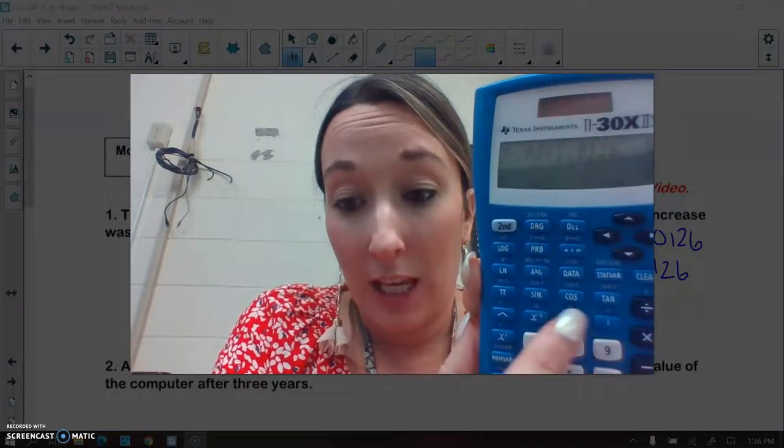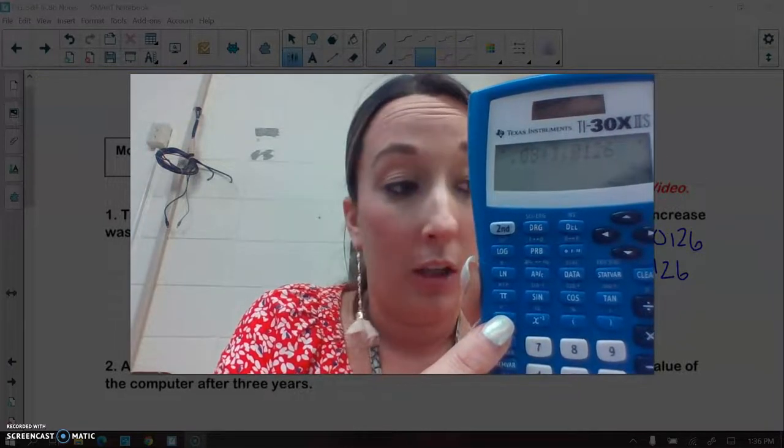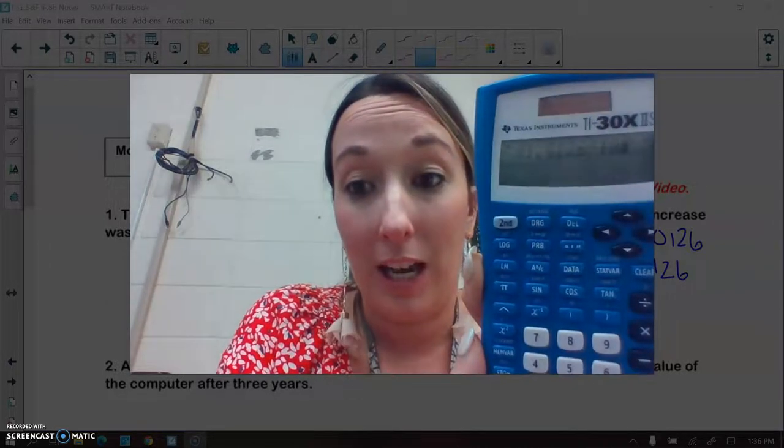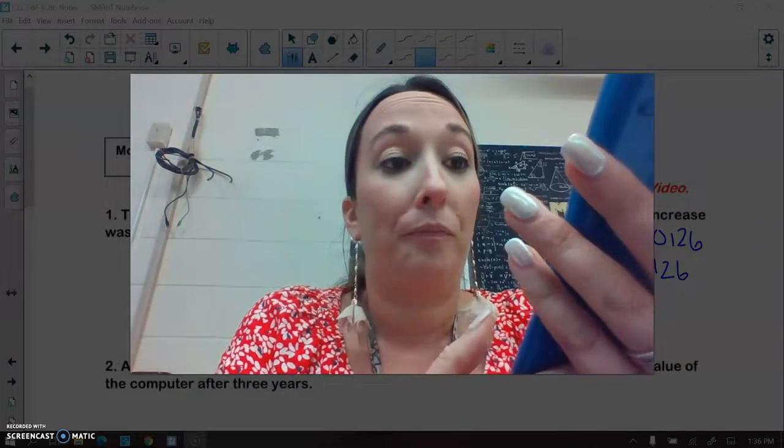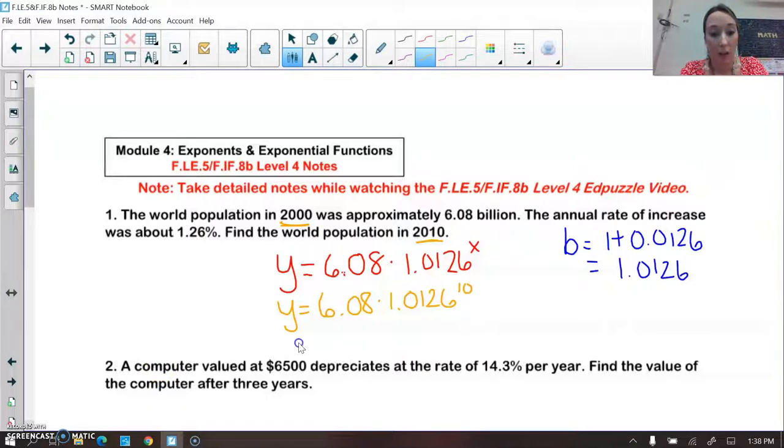And then we are going to raise that 1.0126 to the 10th power, so caret, and then we type in 10 as our exponent. And then we can hit enter. And we get about, so I'm going to do the about symbol. So the squiggly equal sign means it's approximately 6.89 billion people. And that's your answer.